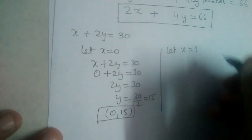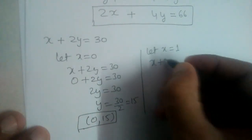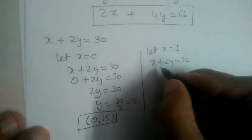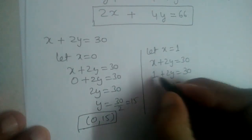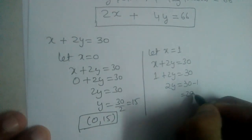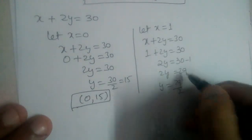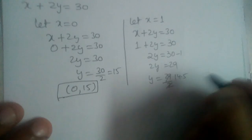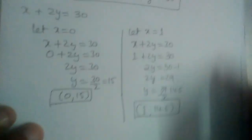Now let us take x equal to 1. Substituting into x plus 2y equals 30, we get 2y equal to 30 minus 1, which is 29. So y equals 29 divided by 2, which gives us 14.5. The second solution is (1, 14.5).